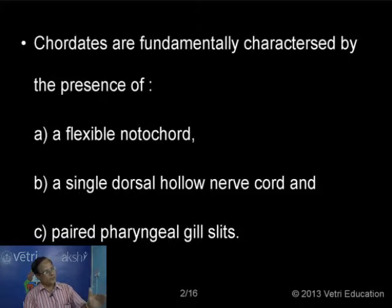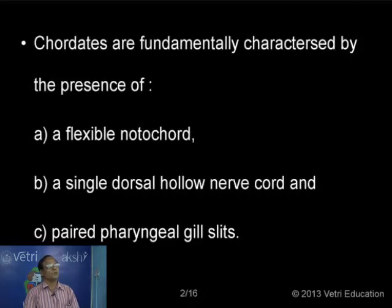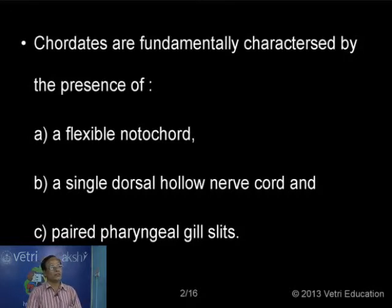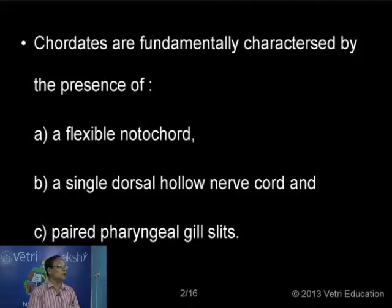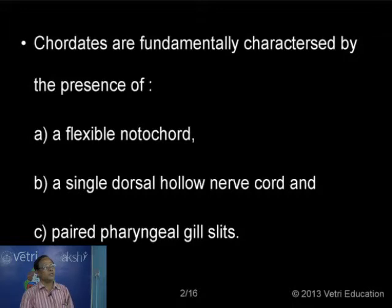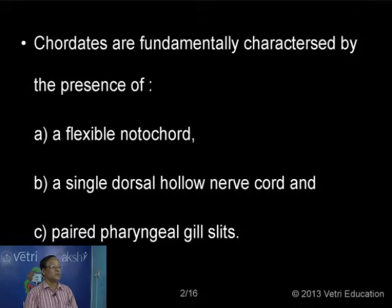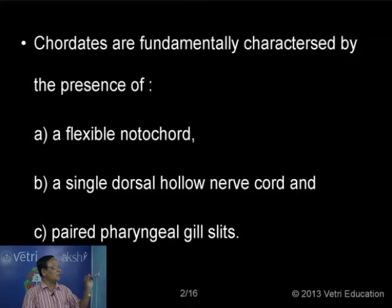In the case of vertebrates, this notochord has been replaced by a vertebral column. But in the case of cartilaginous fishes, though we use the word vertebrates, the notochord persists in the form of a cartilaginous rod. Generally speaking, in most vertebrates, this flexible notochord has been replaced by a bony vertebral column. Simply, all chordates possess a flexible notochord or cartilaginous rod.